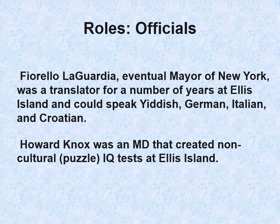Fiorello LaGuardia, eventually mayor of New York, was a translator at Ellis Island for a number of years and could speak Yiddish, German, Italian, and Croatian. He was born in the United States. And here is Dr. Howard Knox. I'd suggest looking up a 1913 full stage simulation of the immigrant experience at Ellis Island — I used some of their script, especially some of the questions asked — and it is available online.